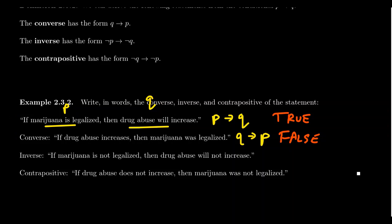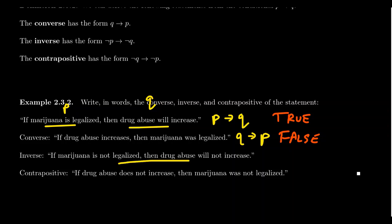Now let's compare what the inverse of this statement would look like. Going back to P implies Q — if marijuana is legalized, then drug abuse will increase — the inverse negates both and keeps the same implication direction: if marijuana is not legalized, then drug abuse will not increase. This statement is probably not true for the exact same reasons as the converse. Drug abuse could increase for many reasons unrelated to marijuana legalization. The truth value of the converse and inverse can differ from the original statement.